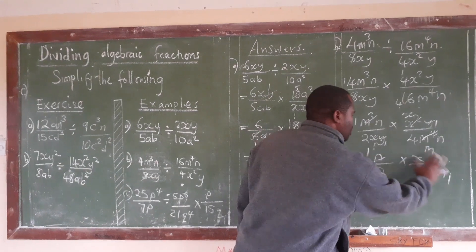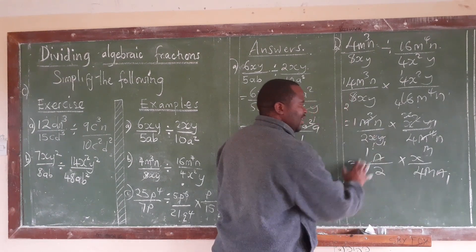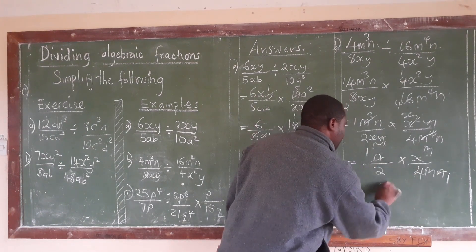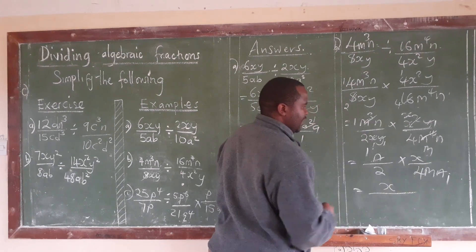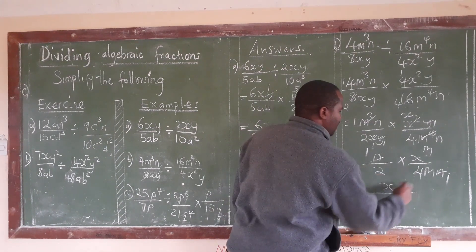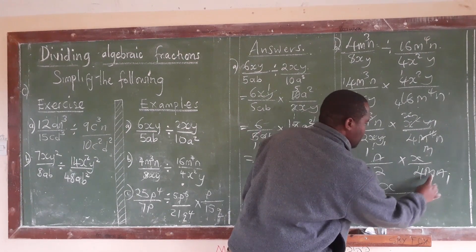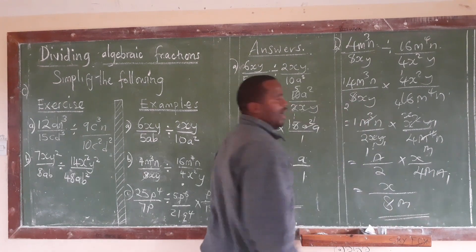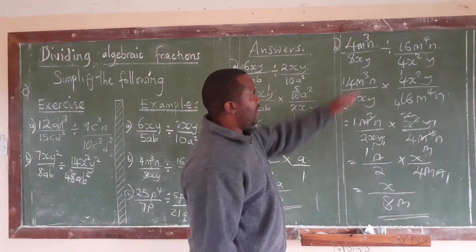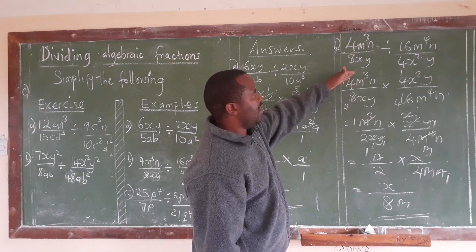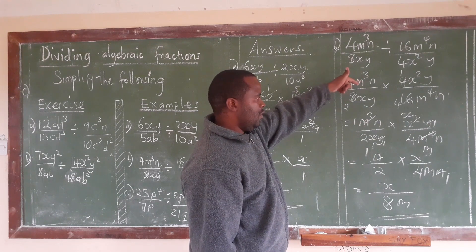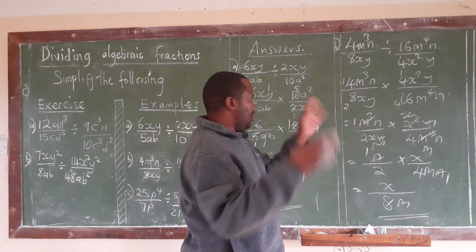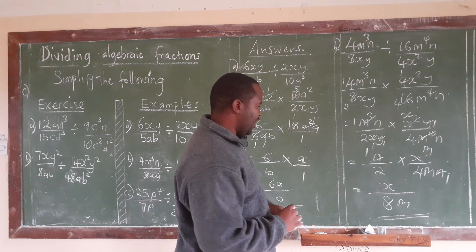This is the only simplification we are able to do. So 1 by X gives X. The best way of dividing is by multiplying: when you introduce the multiplication sign, you get the reciprocal of the second fraction.